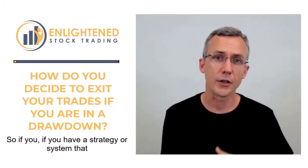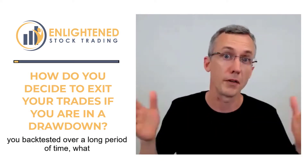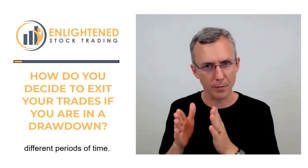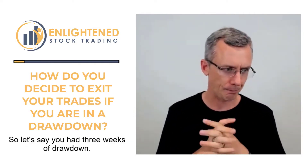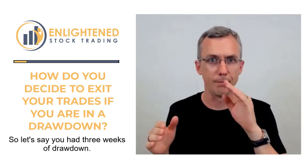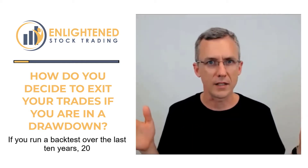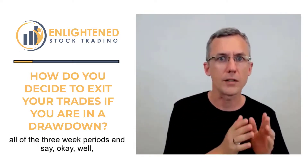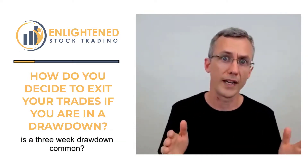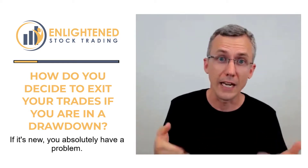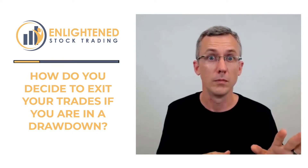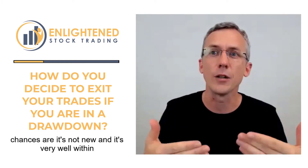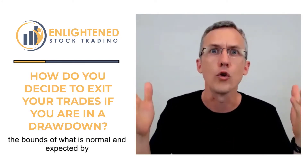If you have a strategy or a system that you've back-tested over a long period of time, what you want to do is look at how it performed over different periods of time. So let's say you've had three weeks of drawdown. If you run a back-test over the last 10 years, 20 years — however much data you've got — you can look at all of the three-week periods and ask: is a three-week drawdown common? Does that happen, or is that new? If it's new, you absolutely have a problem if there's never been a drawdown that long. But chances are it's not new and it's very well within the bounds of what is normal and expected by the system.